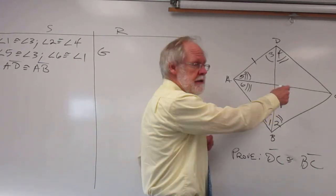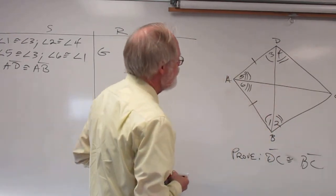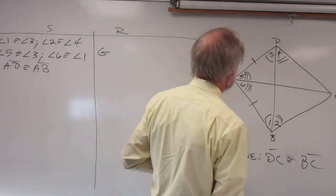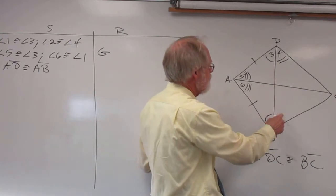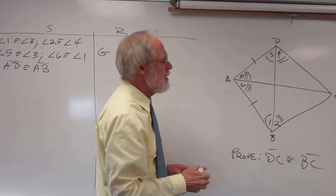A possibility would be to get this triangle congruent to this triangle. That is not looking entirely possible right at the moment. We do have an angle to an angle and we certainly do have this side to itself but we don't have another part.